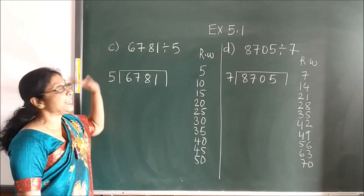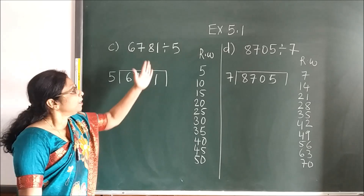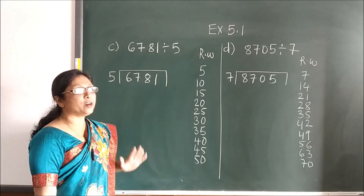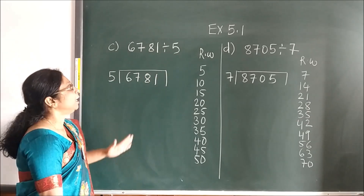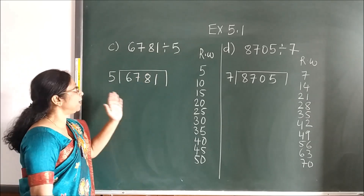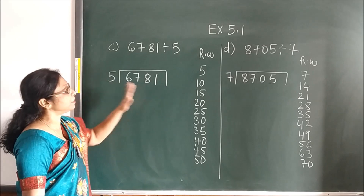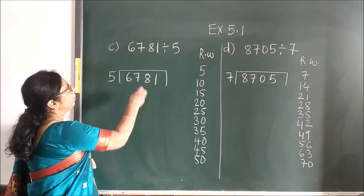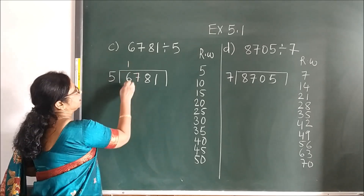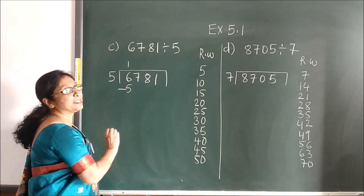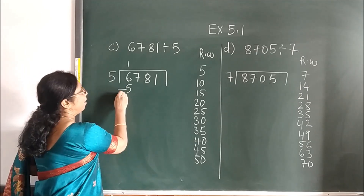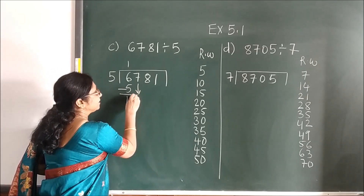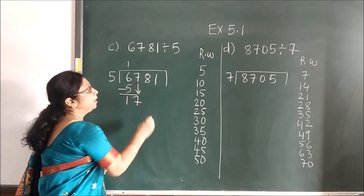Now here, see this sum. We will first do the rough work — that is the table — and then we will use this table to solve. Now 5 ones are 5. Why? Because it is less than 6.